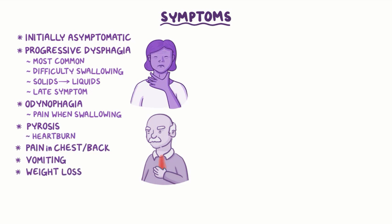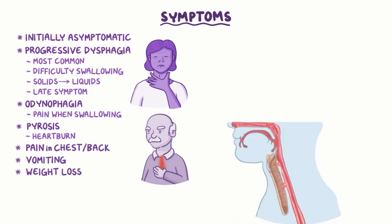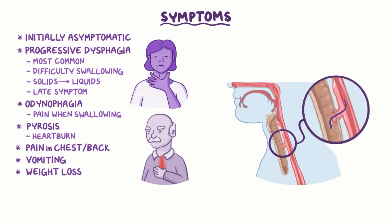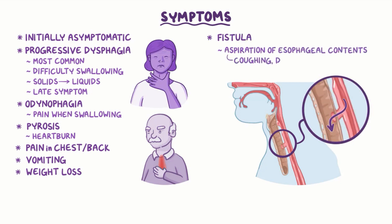When the cancer invades and perforates the entire esophageal wall, it can invade the trachea in front of it, forming a fistula. This can cause pulmonary aspiration of esophageal contents, which may cause symptoms like coughing and dyspnea. If the cancer spreads to the diaphragm, it can cause hiccups.